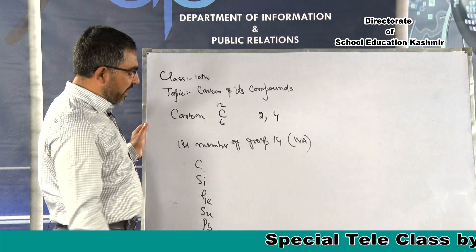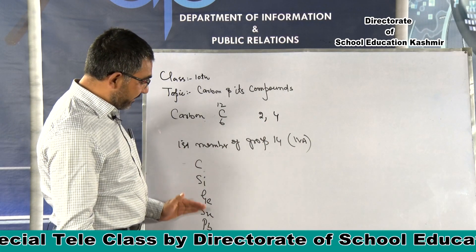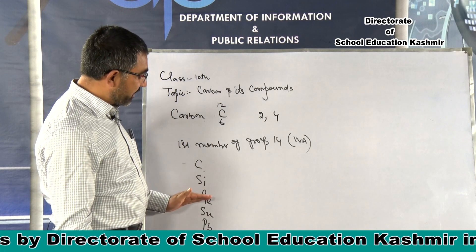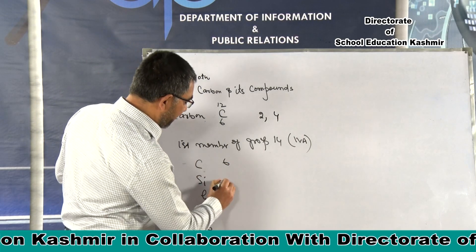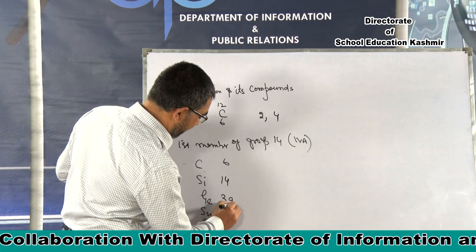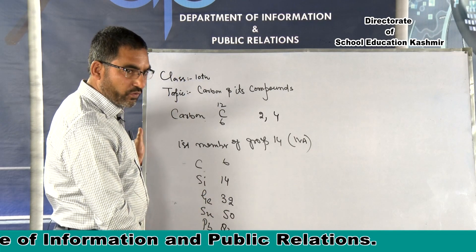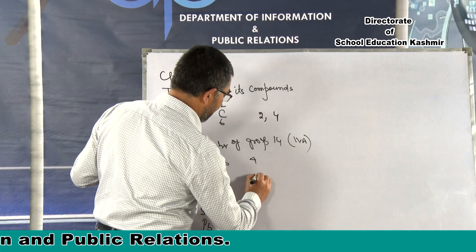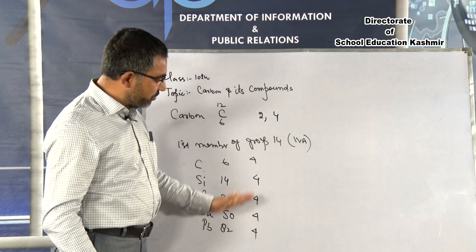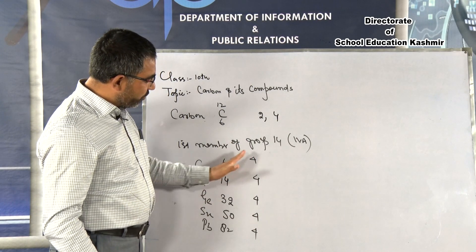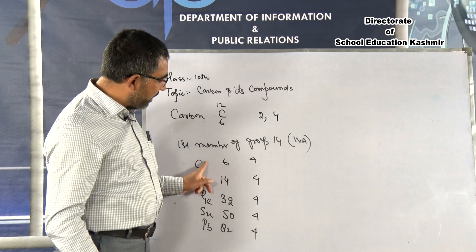Carbon's atomic number is 6 and it has 4 electrons in its valence shell. The atomic numbers of the group 14 elements are: Carbon 6, Silicon 14, Germanium 32, Tin 50, and Lead 82. All these elements have 4 valence electrons in their last energy level. So the valence of Carbon is 4.